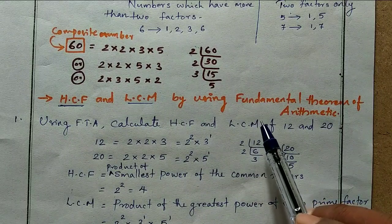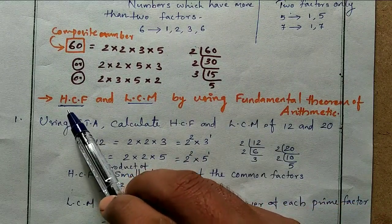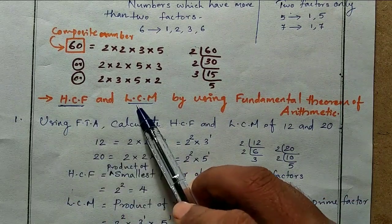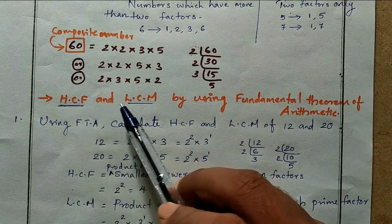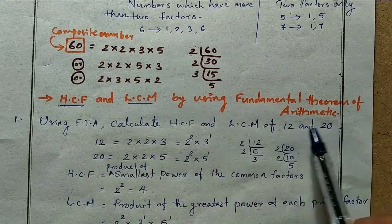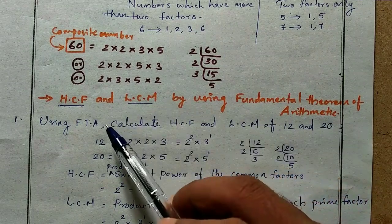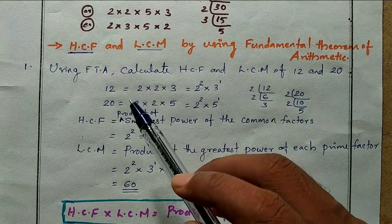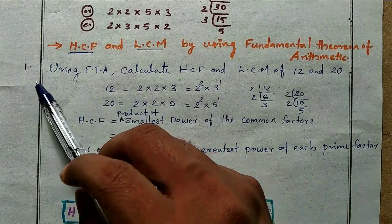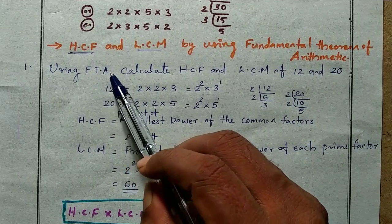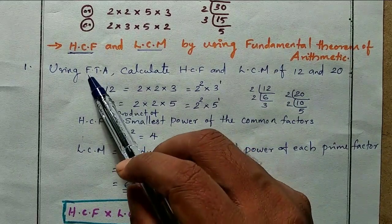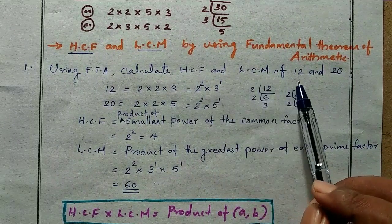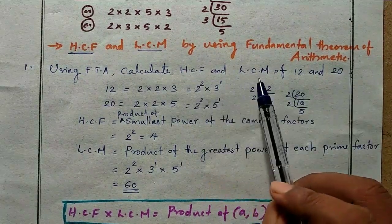The main use of the Fundamental Theorem of Arithmetic is to find the HCF and LCM. It is a very simple concept. Let us understand HCF and LCM through an example. Question number one: using the Fundamental Theorem of Arithmetic, calculate the HCF and LCM of 12 and 20.